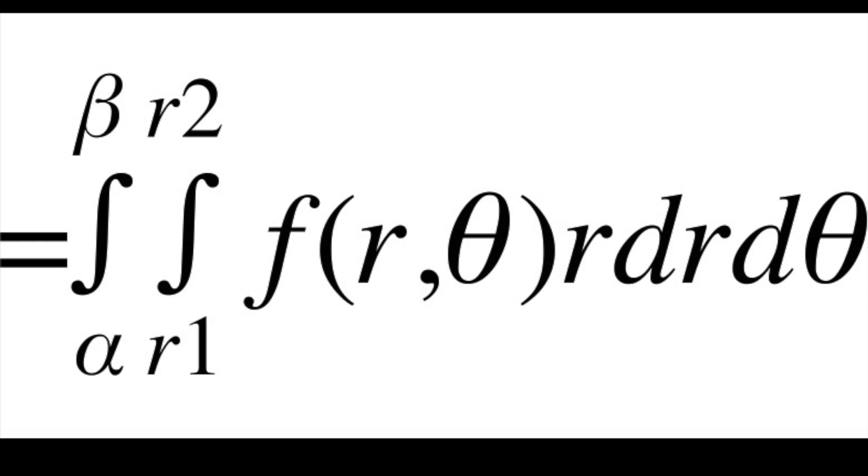For a polar rectangular region where r is a constant from a to b, the greater r or r2 will always be the upper bound and the little r or r1 will always be the lower bound of the inner integral with respect to r. And the outer integral will have the bounds of the surface with respect to theta from alpha to beta.